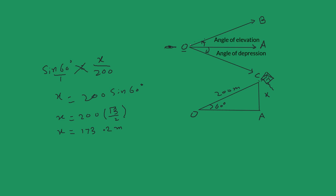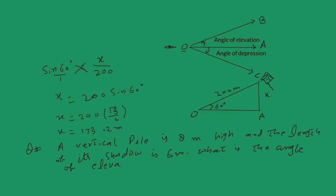Pause the video and try to figure out a practice question. A vertical pole is 8 meters high, and the length of its shadow is 6 meters. What is the angle of elevation of the sun at that moment?